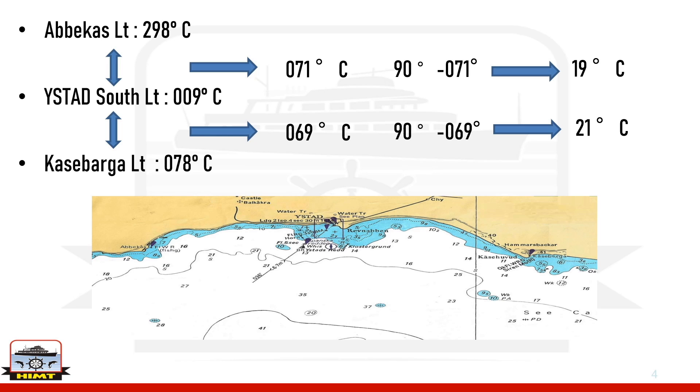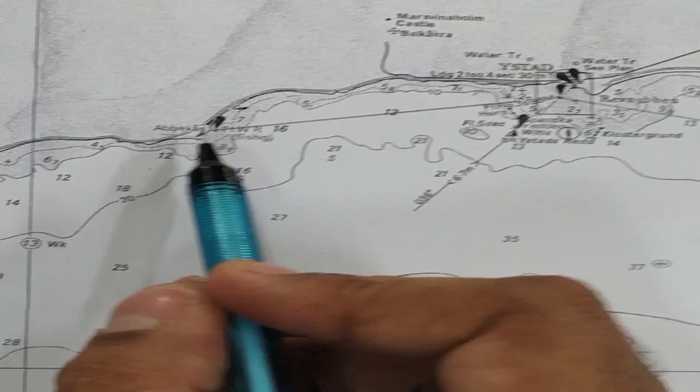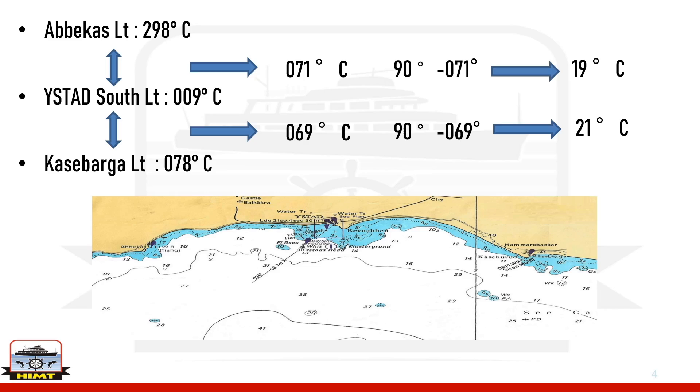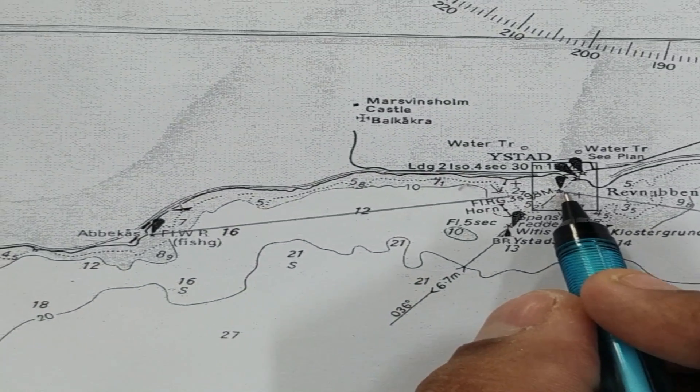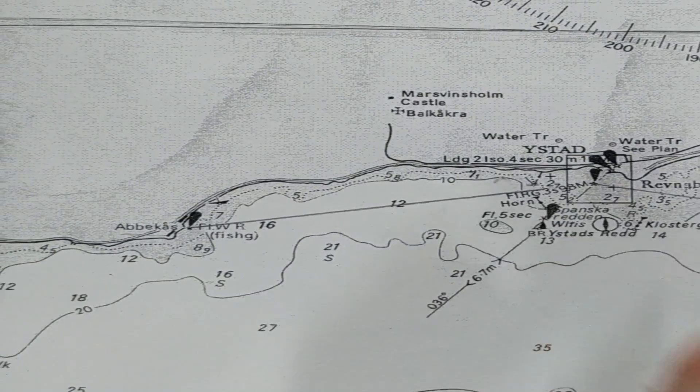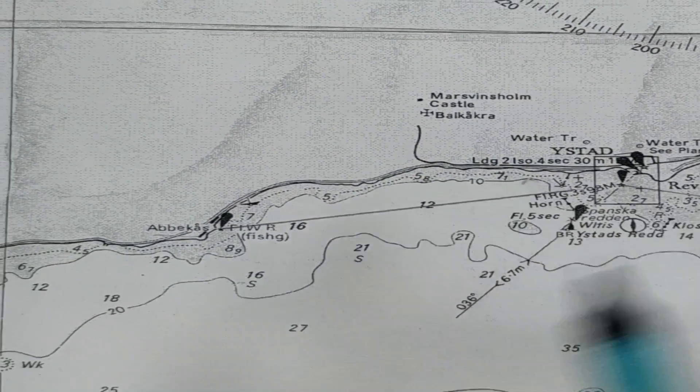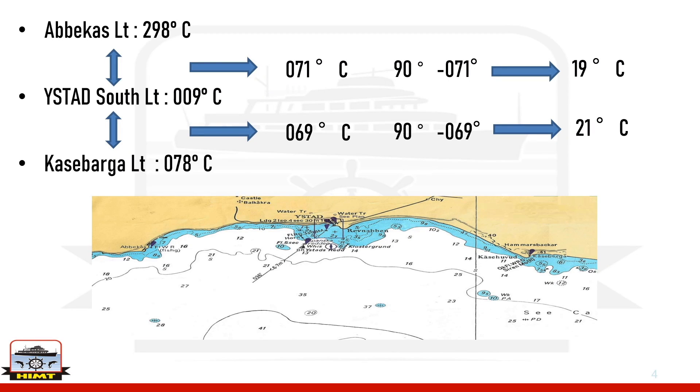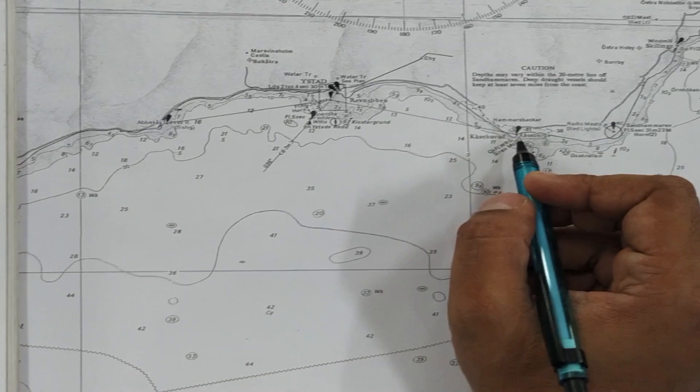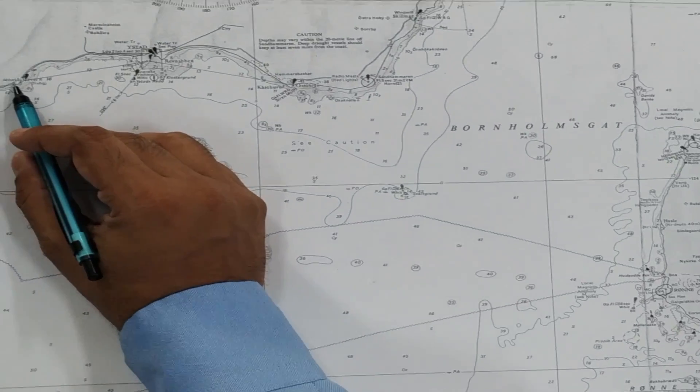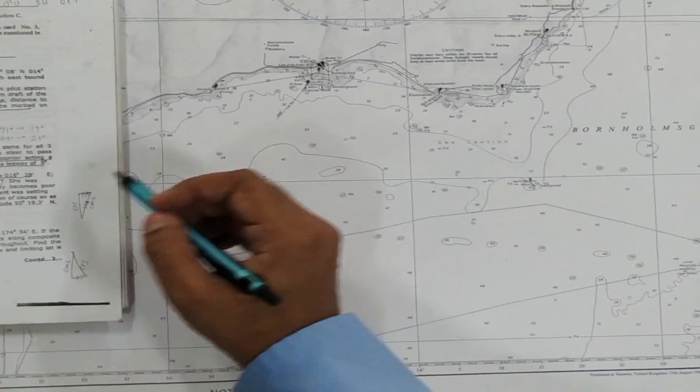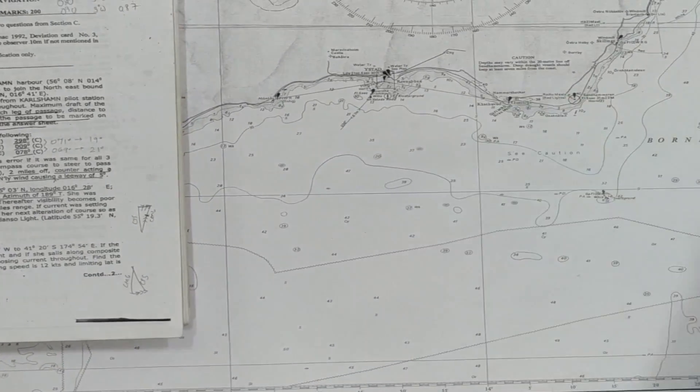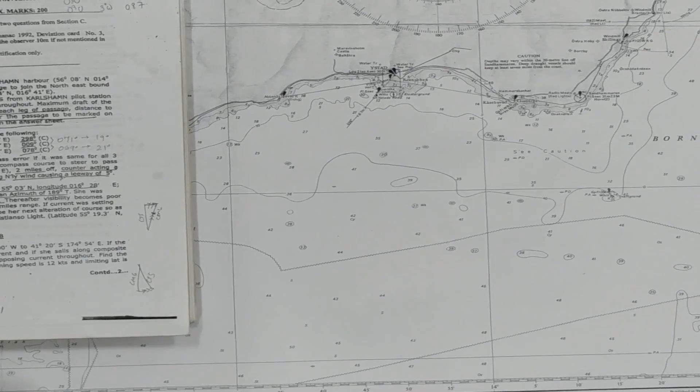Now let's come to the chart. Let's identify these lights. The first one is Abbekas light. The second one is Weistad south, and there are many lights over here. We take the light which is the maximum amplitude. The third one is Kasebarga. So the first step is for us on the chart to draw the baselines. Join up Abbekas and Weistad because they are the first two lights, followed by Weistad and Kasebarga.